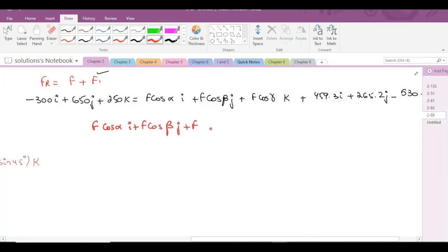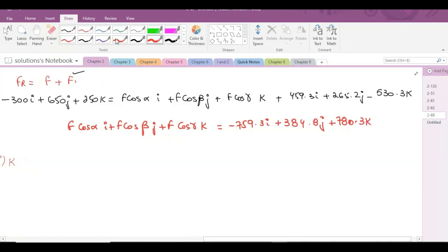If I shift these i, j, and k components to the left-hand side, F force in terms of Cartesian vector form becomes F cos alpha i plus F cos beta j plus F cos gamma k equals negative 759.3 i plus 384.8 j plus 780.3 k. What I have done here is I just shifted these components to the left-hand side and then subtracted them.